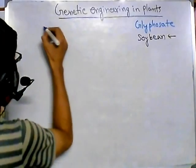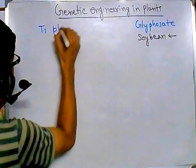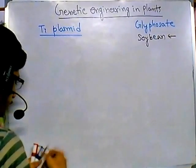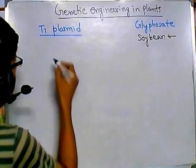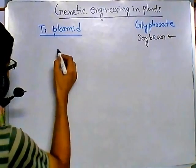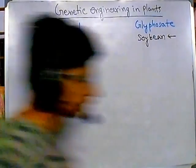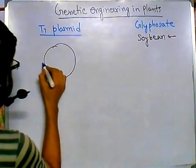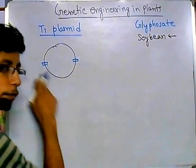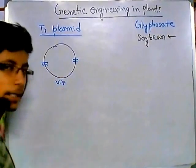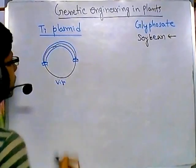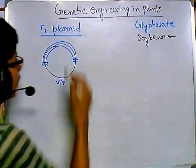For plant genetic engineering, the best vector to use is the Ti plasmid — the Ti plasmid is very important for transferring genetic elements. If I draw the Ti plasmid, there are two important sections: one section contains the virulence genes — the vir genes — and the other section is the T-region, or Ti region, which contains the genetic element that will be transferred.